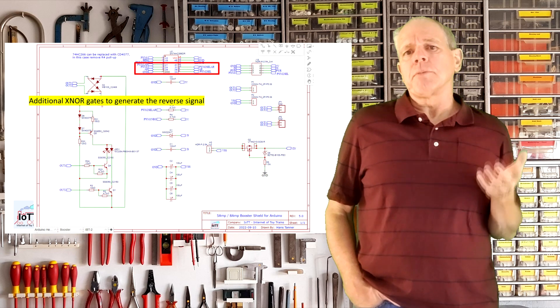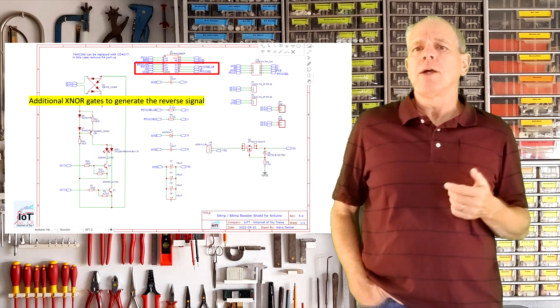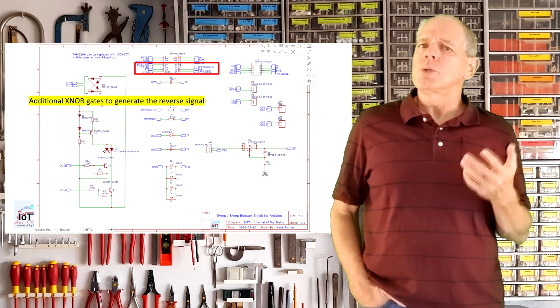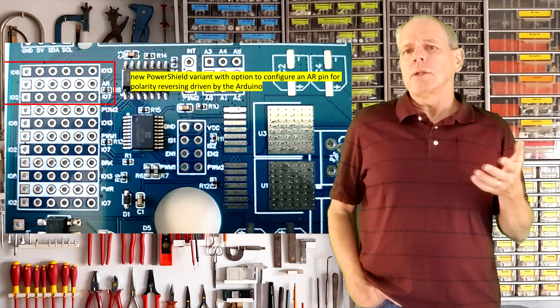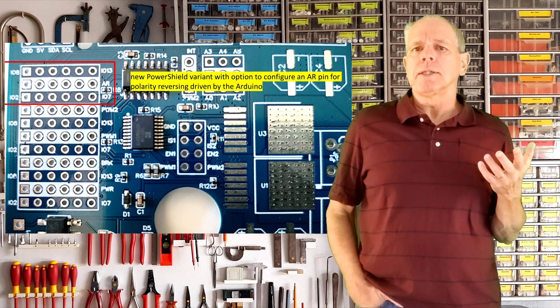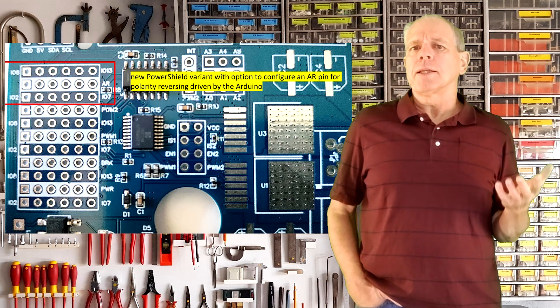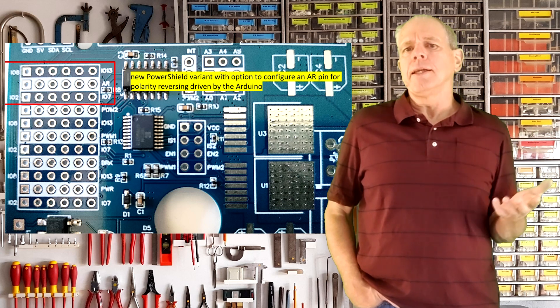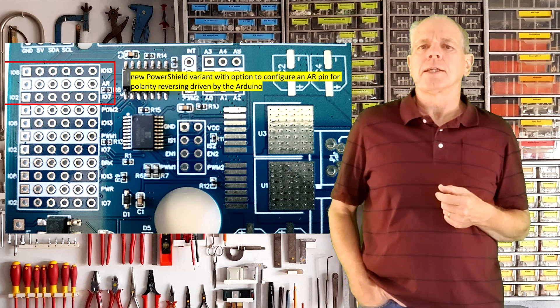I reviewed the power shield schematics and came up with a modified version that has an additional IOPin that can be used to reverse the output polarity. Similar to all other configurations on the power shield there is now a new AR bar that can be connected to an Arduino pin and then the Arduino can actively change the polarity of the power shield track signal.